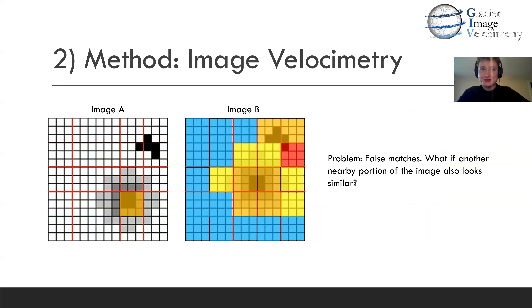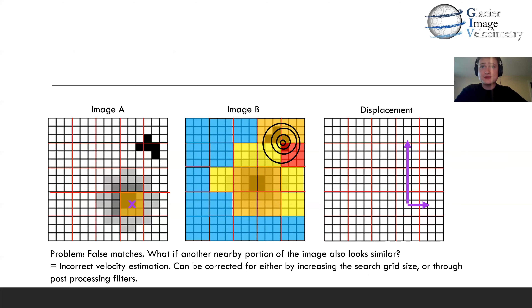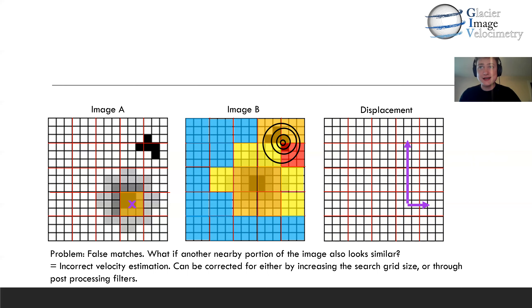There are some challenges to this, for example false matches. What if there is another pattern that also looks similar, and in the second image it happens to look more similar than the first? We'll get a false match and a very different velocity estimation. A lot of the challenges of applying this technique to glaciers involve this type of scenario. Glacier surfaces are quite noisy and variable through time — they're not carefully controlled like tracers in a laboratory setting. So a lot of feature tracking toolboxes involve pre-processing and post-processing to get the best possible velocity maps of glaciers.